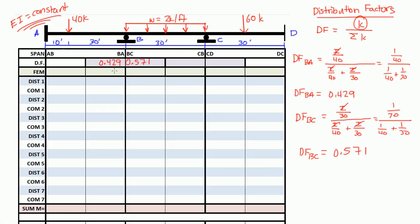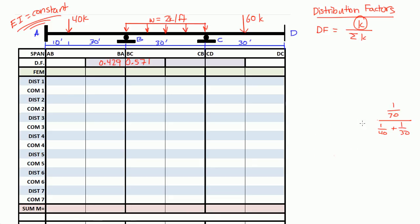Notice that the distribution factor for each joint should be equal to 1. So if you add 0.429 plus 0.571, you should get 1. So you can do that check when you're calculating distribution factors. Now, let me just erase all of this. And then we're going to find the distribution factor for joint C.